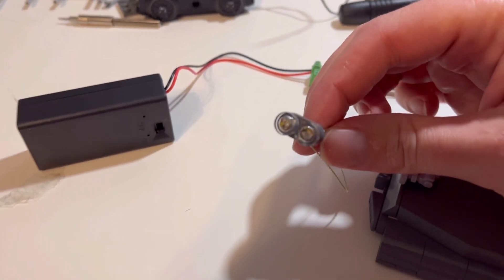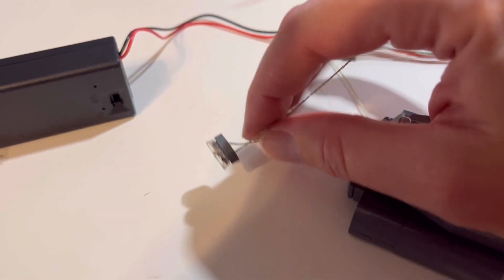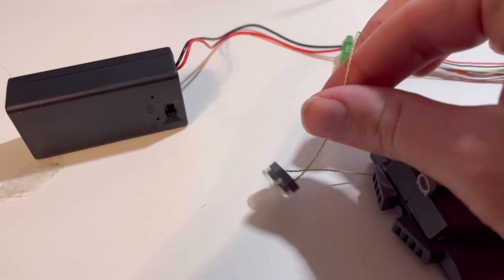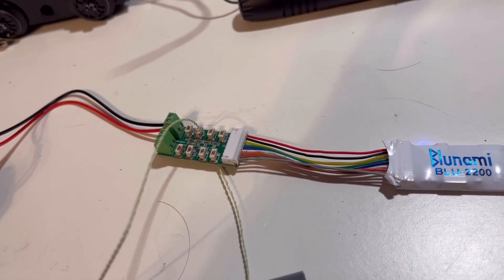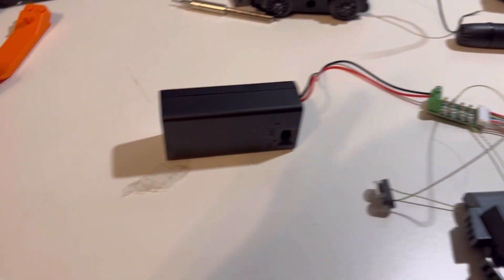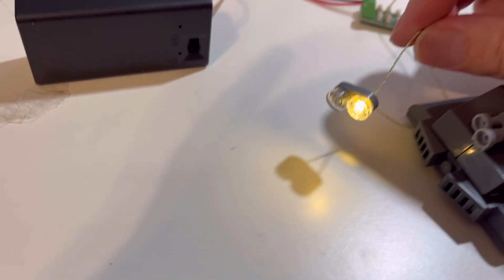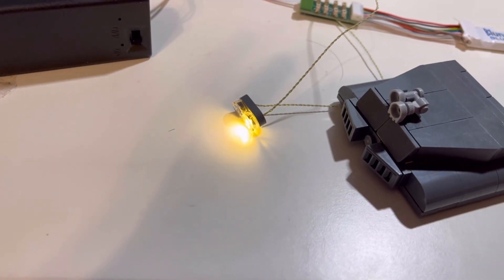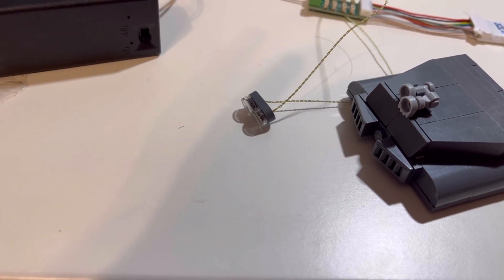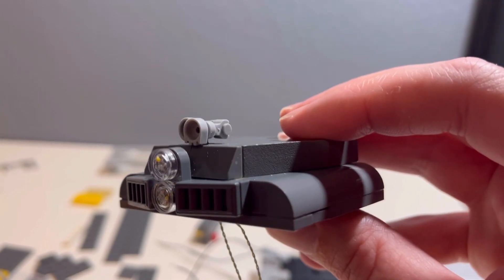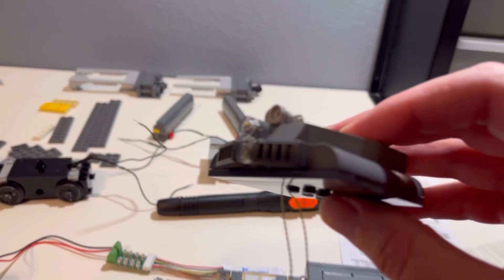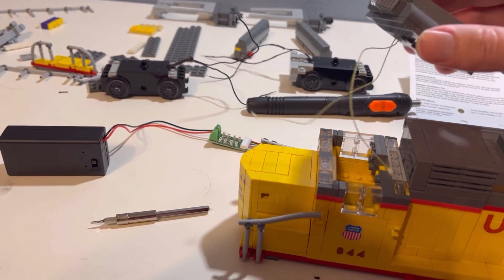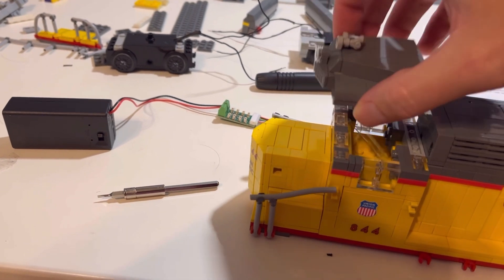So here we've installed the two lifelight micro LEDs into our headlight housing. They're specially designed for this. They just go straight under the clear Lego plastic lenses and they just plug straight into our lifelight adapter board making the installation very simple.